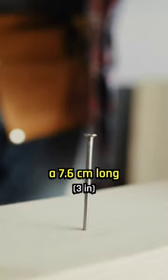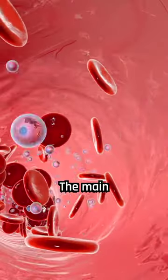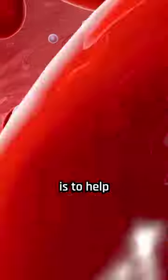Your body has enough iron to make a 7.6 centimeters long metal nail. The main function of iron in your body is to help transport oxygen.